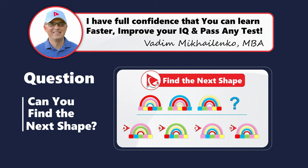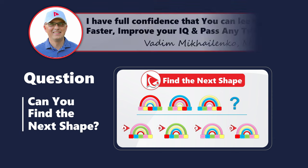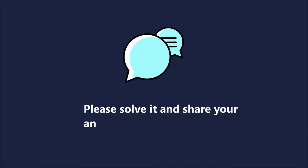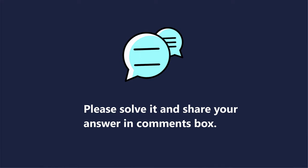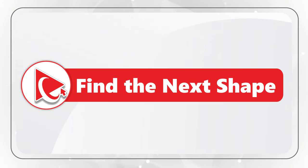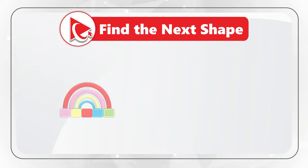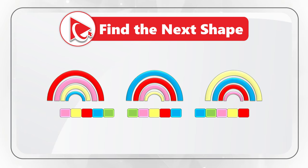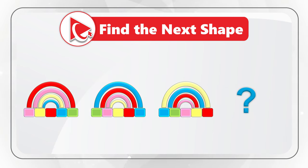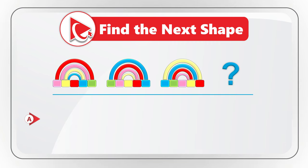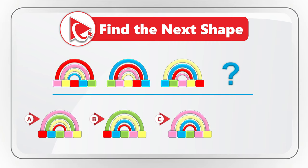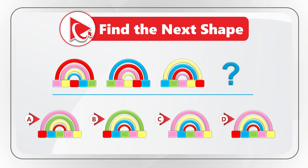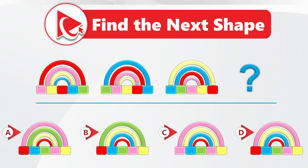I have a surprise question for you. For this question, I am not going to share the answer — you need to come up with the solution on your own and post it in comments. You need to find the next item in a sequence of three rainbows. Each object has items on the top as well as squares at the bottom. Select the next item out of four choices: A, B, C, and D. Post your answer in comments and I'll give you my feedback. Thanks for participating and good luck.